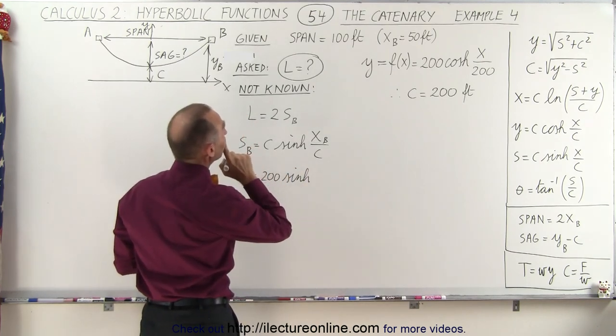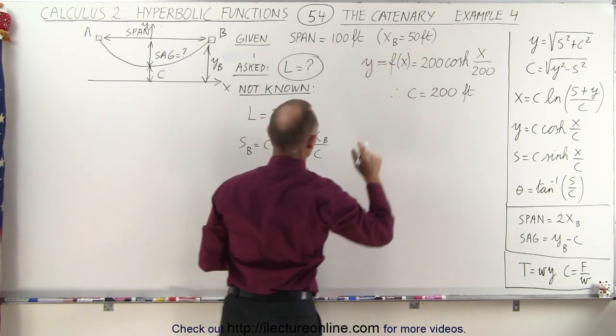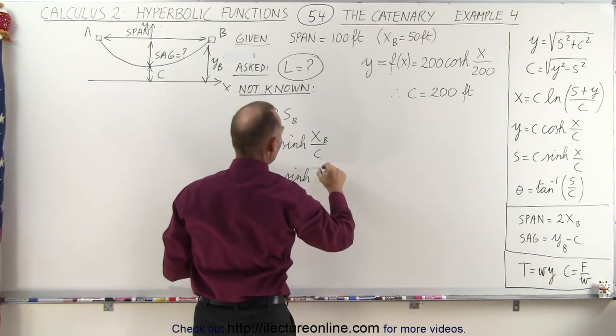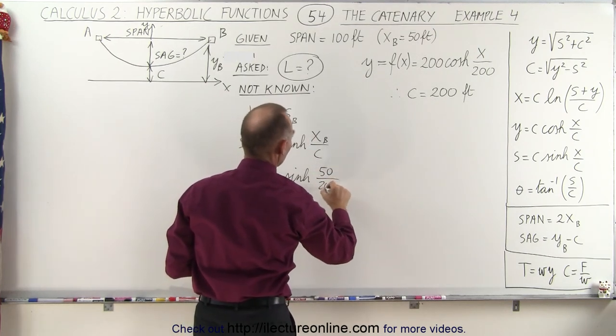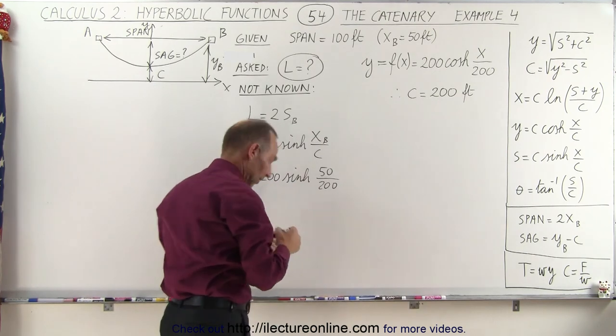And so this becomes equal to 200 times the hyperbolic sine of x sub b. Now, x sub b, well, let's see here. We're given that. That's equal to 50. Since they gave us the span, so it would be 50 divided by 200, and that should give us s sub b.